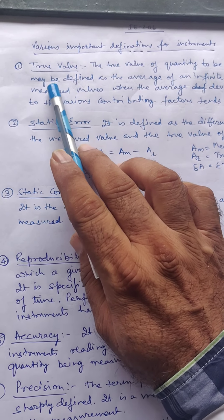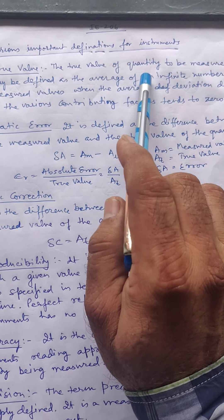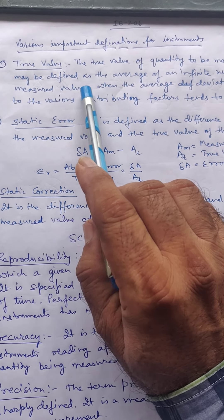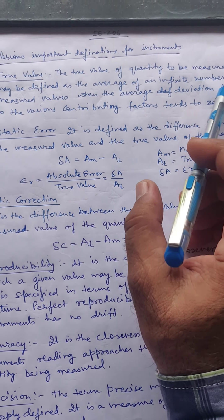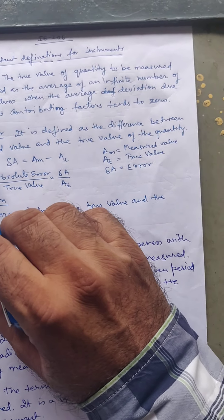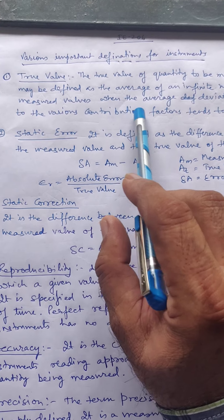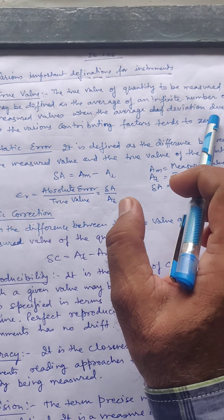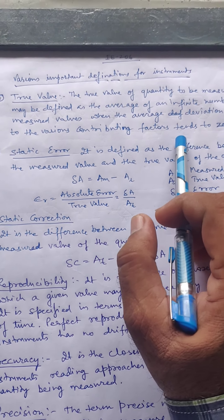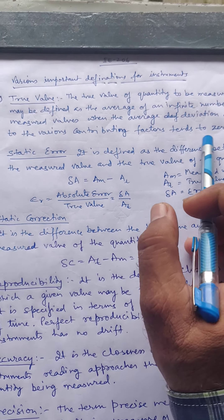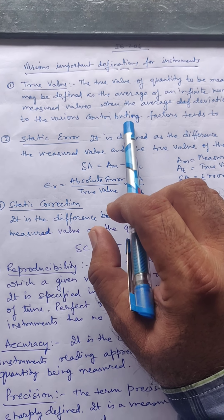The first definition is true value. The true value of the quantity to be measured may be defined as the average of an infinite number of measured values, when the average deviation due to the various contributing factors tends to zero.